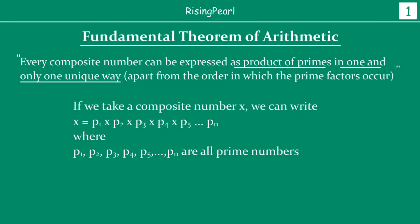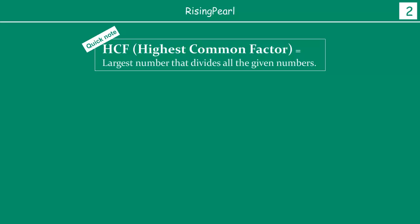Now we know what we mean by the fundamental theorem of arithmetic — we have seen this in great detail. We have also seen how the fundamental theorem of arithmetic directly leads us into prime factorization and what prime factorization is. So now let's find out how we can find HCF using prime factorization.